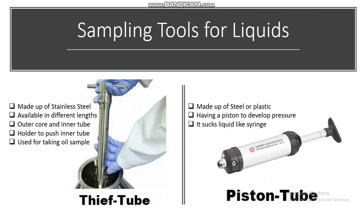Sampling tools for liquids: The first one is the thief tube, which is made up of stainless steel and is available in different lengths. It has an outer core and inner tube, and a holder is provided to push the tube inside or outside. It is used mostly for taking oil samples from a drum. The second one is the piston tube, made up of steel or plastic, having a piston to develop pressure — it sucks liquid like a syringe.